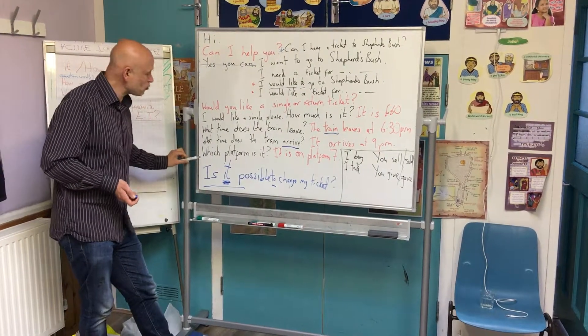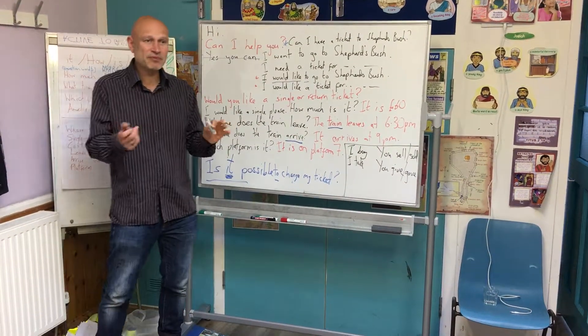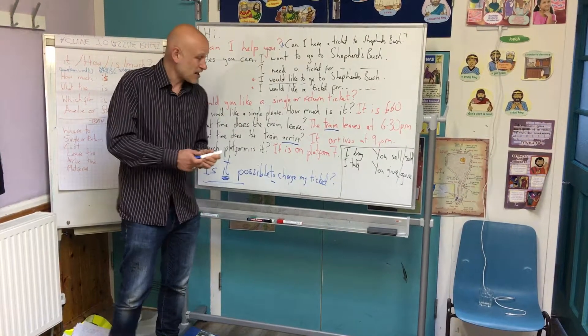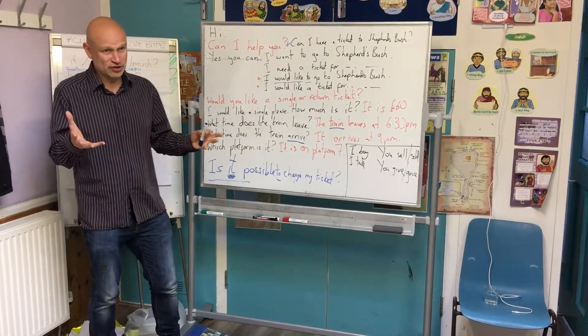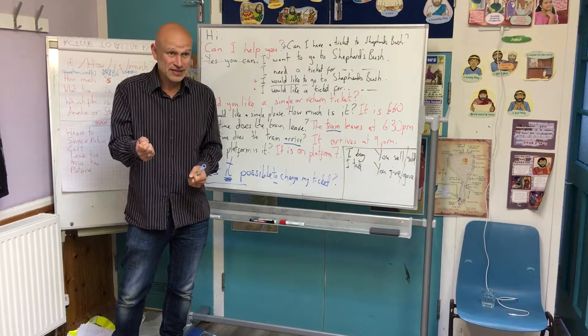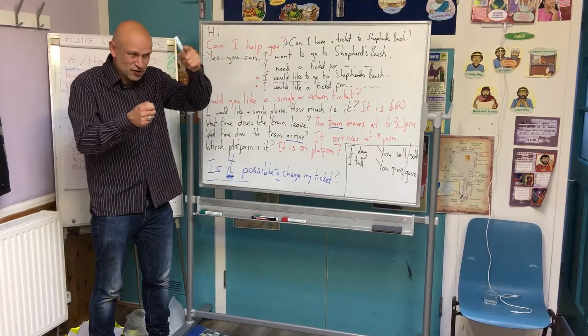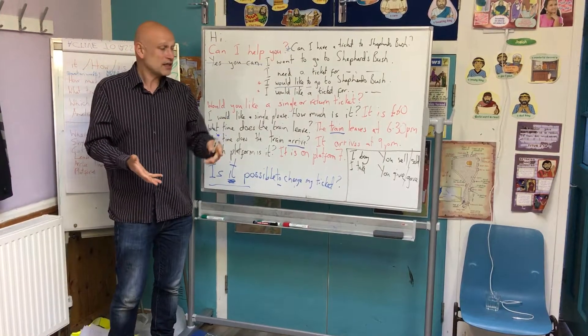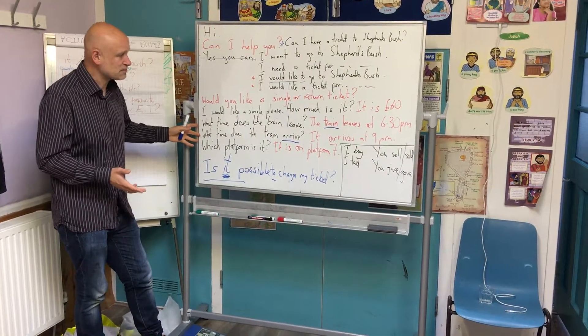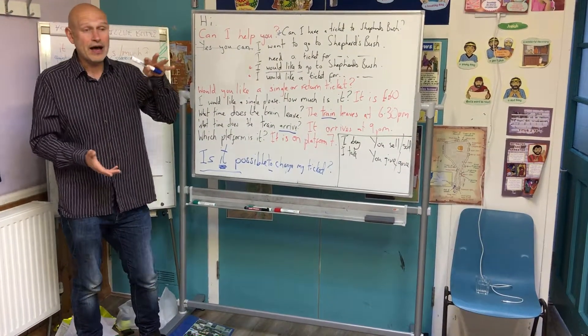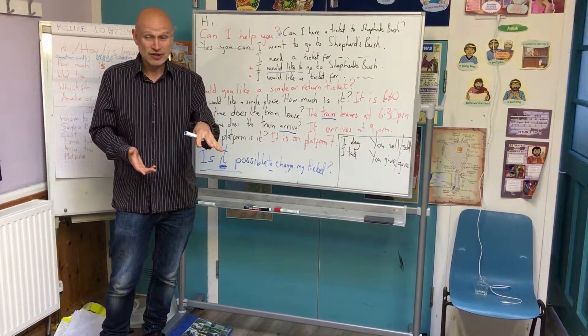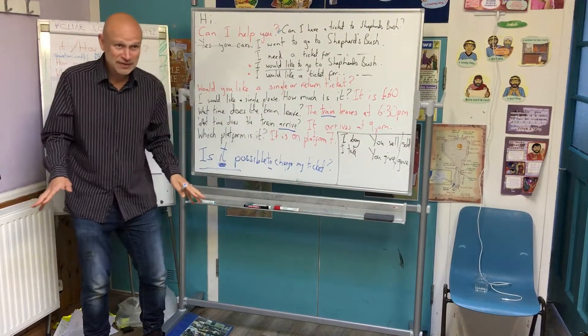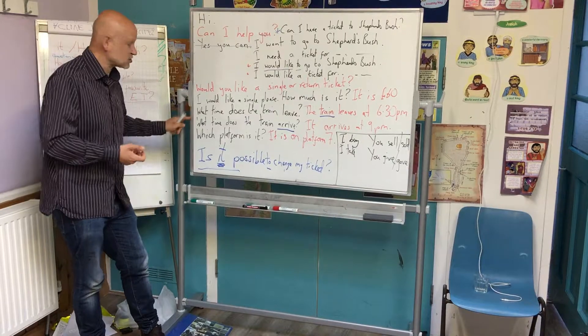And then we can ask for more information, because it's really important to get this information when we go and buy a ticket. Without this information, we're trying to look at the sheet and get the information. But it's much easier if you ask these three basic questions when you get to the train station. And not just foreign people.